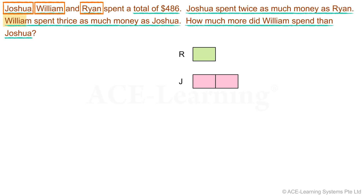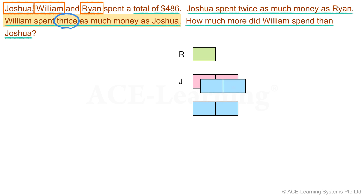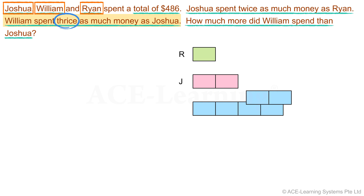Now for William, he spent thrice or three times as much money as Joshua. We note that Joshua's expenditure is represented by two units. The amount that William spent is three times a set of two units — this is the first set, this is the second, and this is the third. We will use W to represent William.